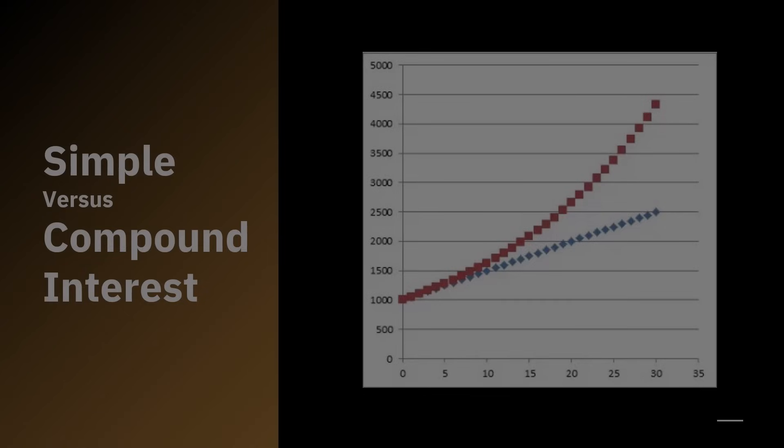The concept of compounding interest is a powerful financial mechanism that feels like having a magical money multiplier. But instead of magic, it's the mathematical marvel of earning interest on interest, or growth on growth, that creates a snowball effect, amplifying your wealth over time.